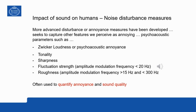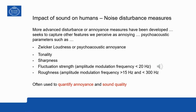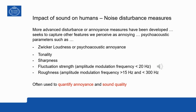One example of large fluctuation strength is wind turbine noise. As you can hear, the fluctuation strength varies clearly in time, and this is perceived as very annoying.